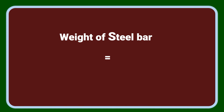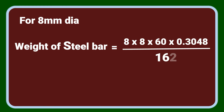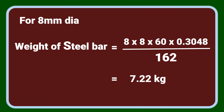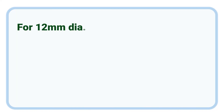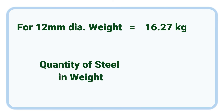Using the D² × L ÷ 162 formula we can find the weight of steel. For 8 mm dia: 8 × 8 ÷ 162 × 60 feet, converting length from feet to meters by multiplying by 0.3048, gives 7.22 kg. For 12 mm dia, the same calculation gives 16.27 kg. Finally, the total quantity of steel in terms of weight is 23.49 kg.